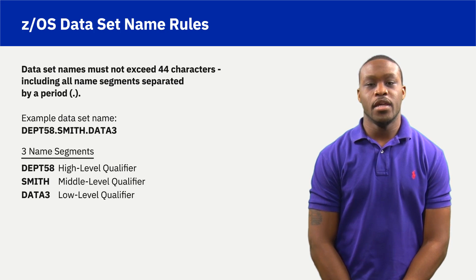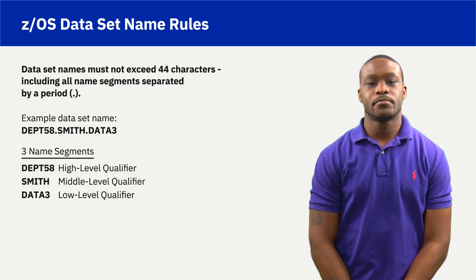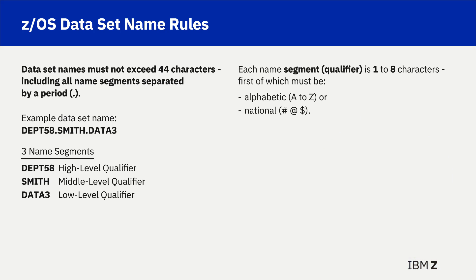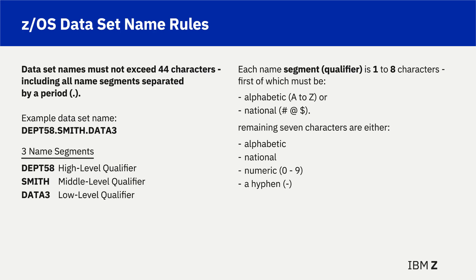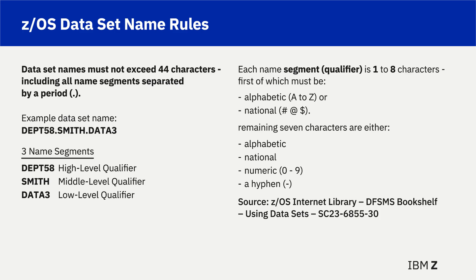The last name, data3, is the low-level qualifier. Each named segment or qualifier is 1 to 8 characters, and the first character must be alphabetic, A to Z, or national: pound sign, at sign, or dollar sign. The remaining seven characters are either alphabetic, national, numeric, or a hyphen.